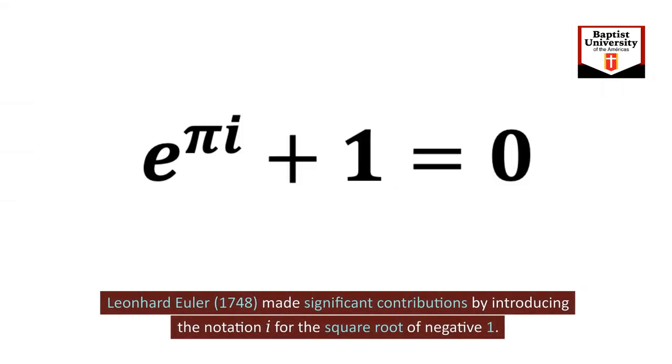Leonhard Euler, 1748, made significant contributions by introducing the notation I for the square root of negative one.